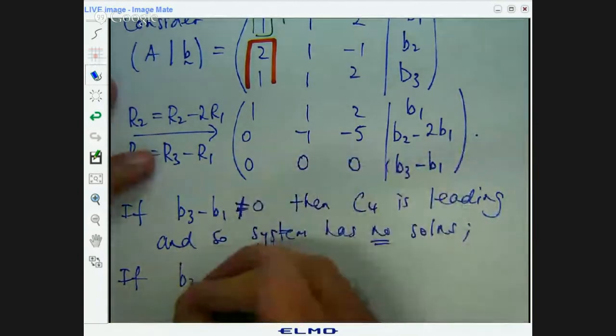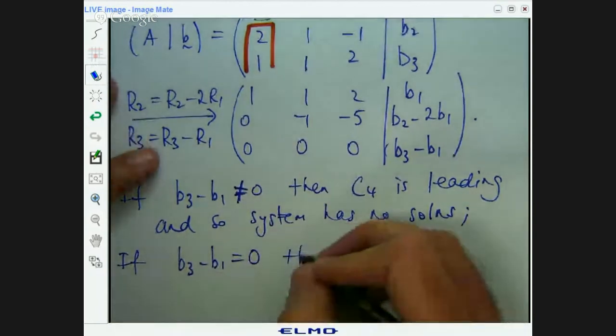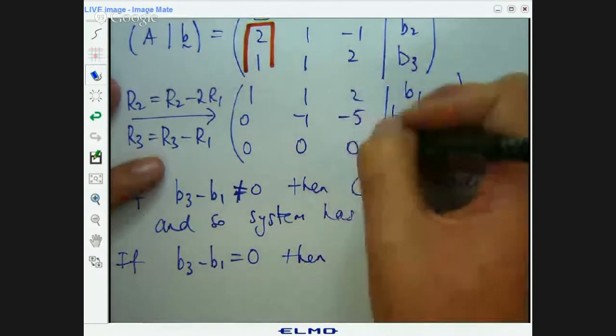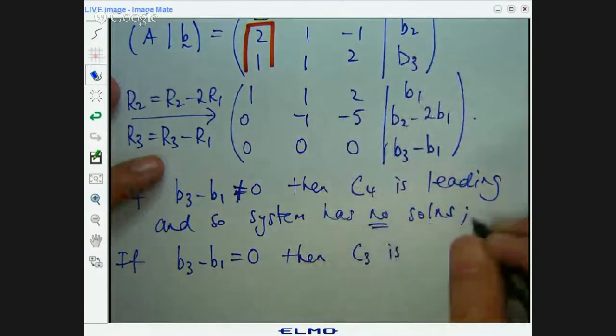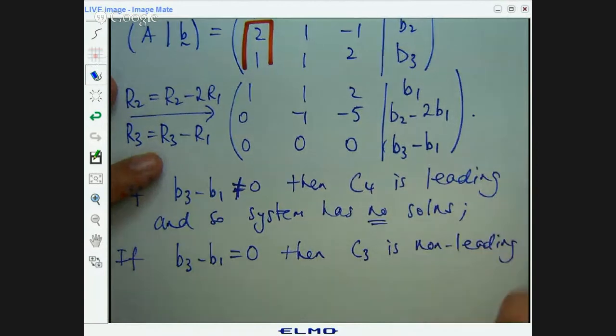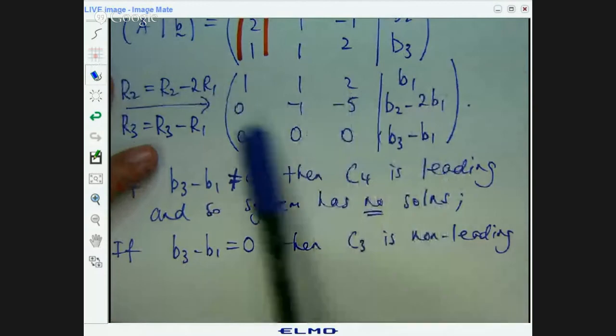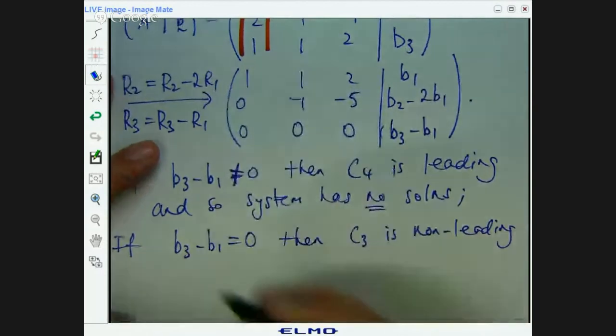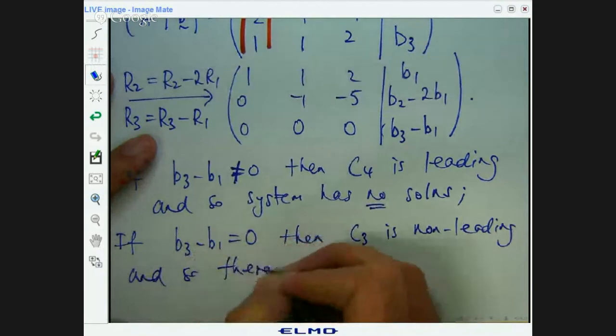Alright, if b3 minus b1 does equal 0, in other words if b1 and b3 are the same, then column 3 is not a leading column. So c4 is no longer a leading column and one of these left-hand columns is. So c3 is leading. And so there are infinite number of solutions.